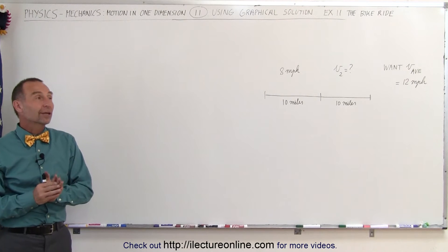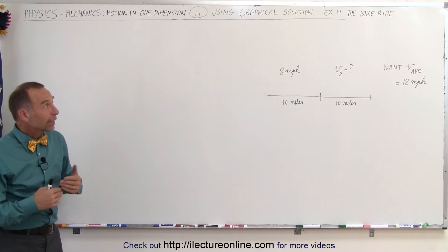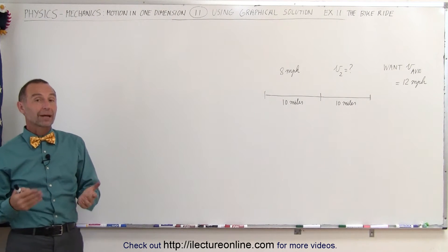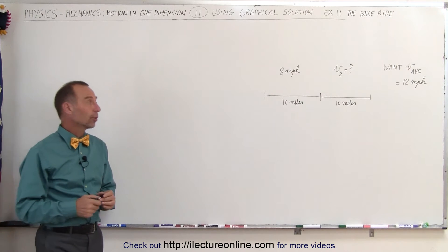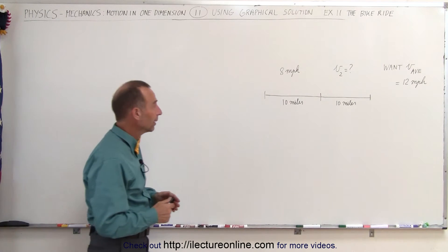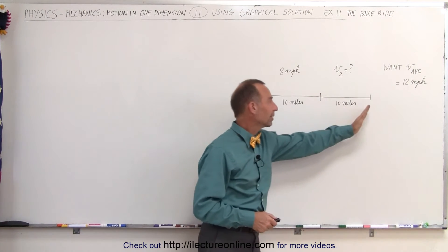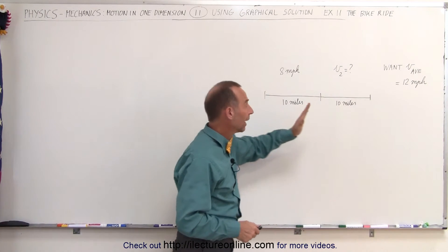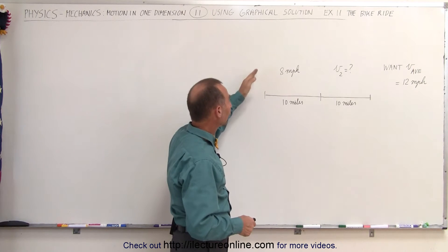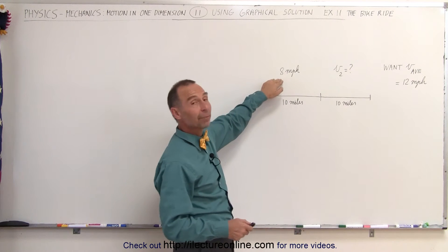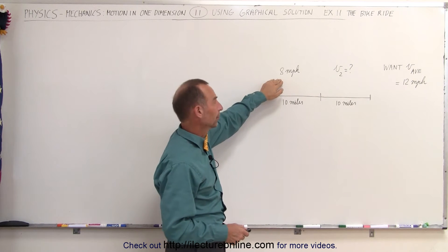Welcome to our lecture online. Our next example is what we call the bike ride. A person wants to go bike riding, wants to cover a total distance of 20 miles, and rides the first 10 miles at a speed of 8 miles per hour.